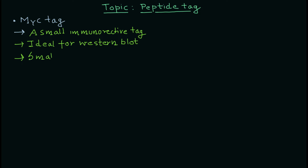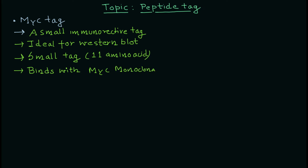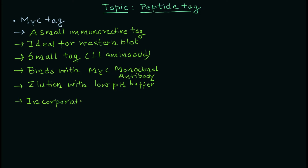Because it is immunogenic, it is ideal for western blot — you can directly do western blotting, and you have antibodies that can bind to the recombinant protein. The myc tag binds with a myc monoclonal antibody, so purification will be highly specific and you will get highly purified protein. Elution is usually done using a low pH buffer, which reduces the affinity of the monoclonal antibody against the antigen, allowing the protein to be eluted.